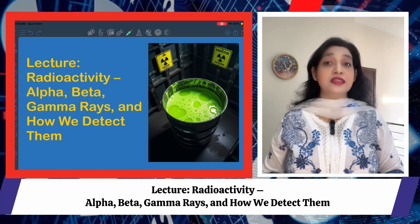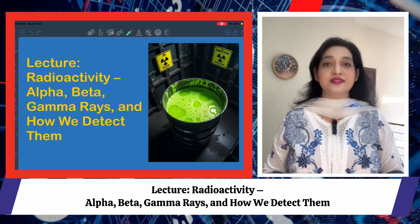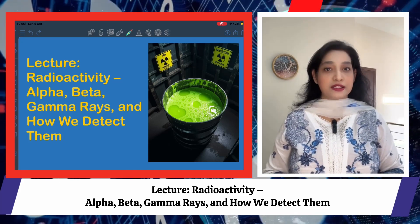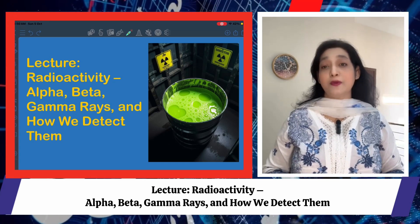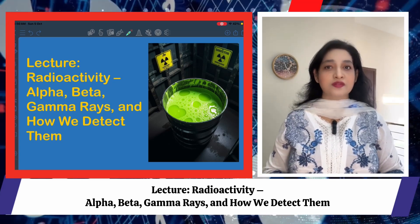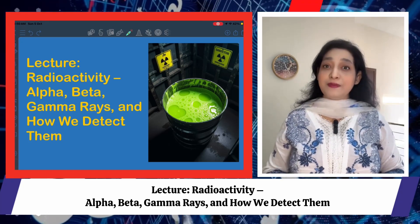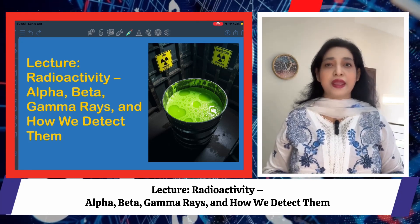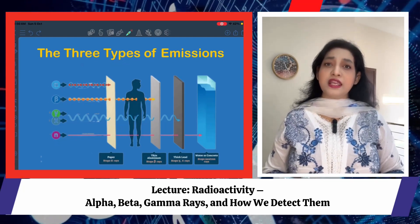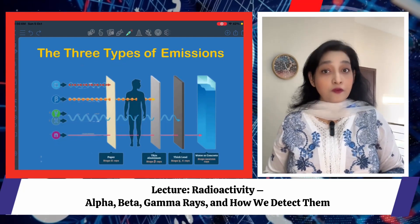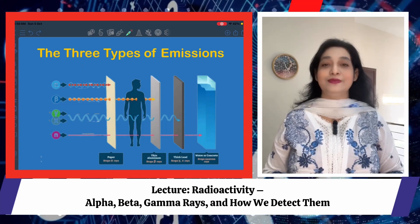When this happens, the nucleus releases energy and particles. This process is called radioactive decay, and it is radioactivity. It's a natural process — it happens in rocks, bananas, and even our bodies. The three main types are alpha, beta, and gamma emissions. They differ in what they are, how far they travel, and how dangerous they can be.